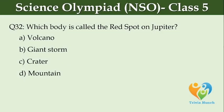Which body is called the red spot on Jupiter? Option A, volcano. Option B, giant storm. Option C, crater. Option D, mountain.